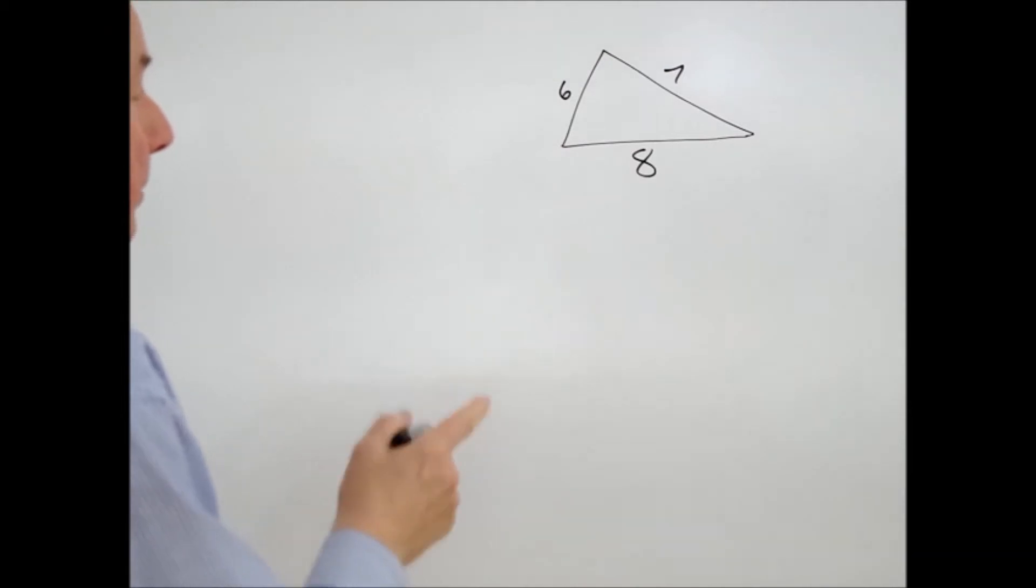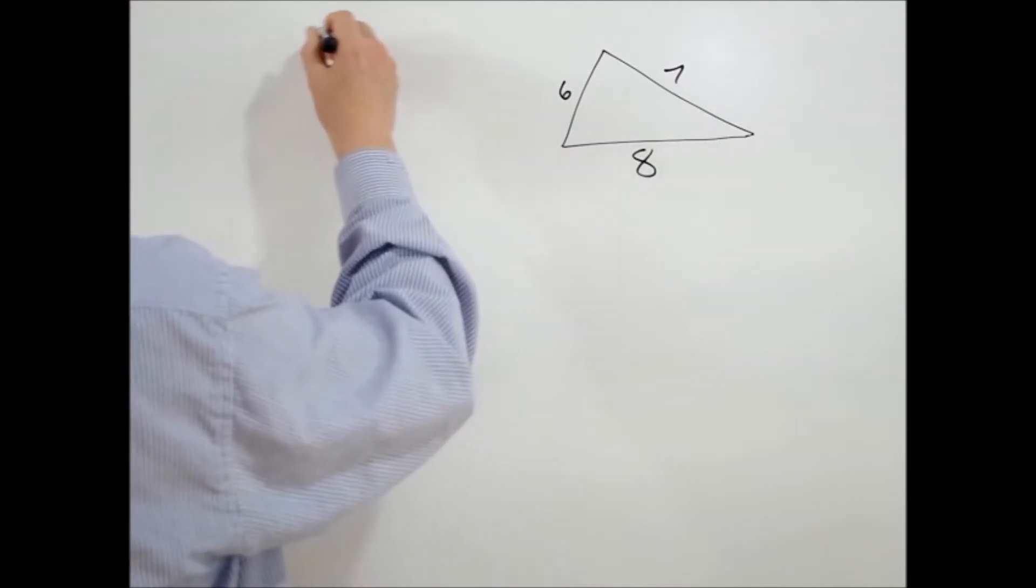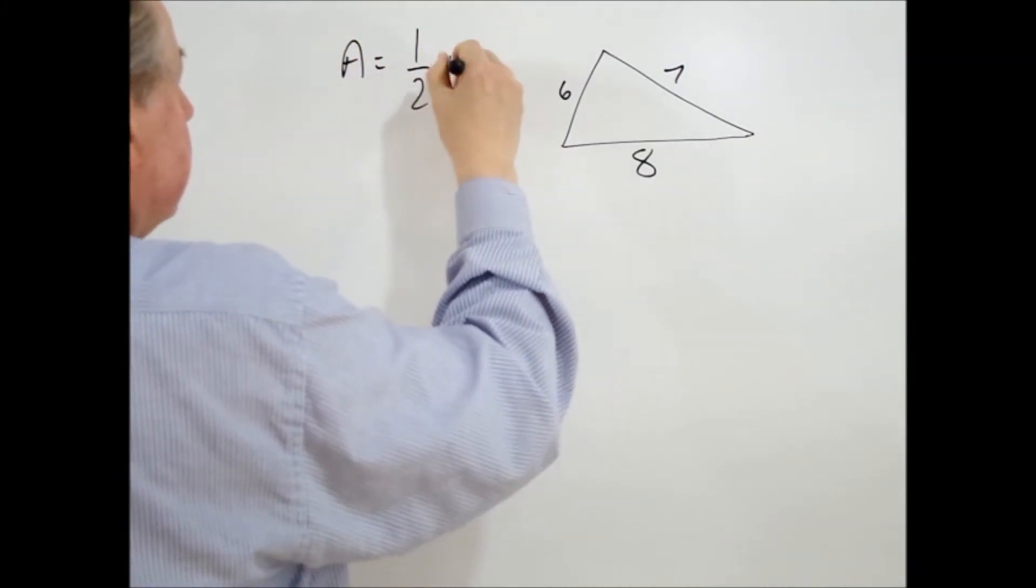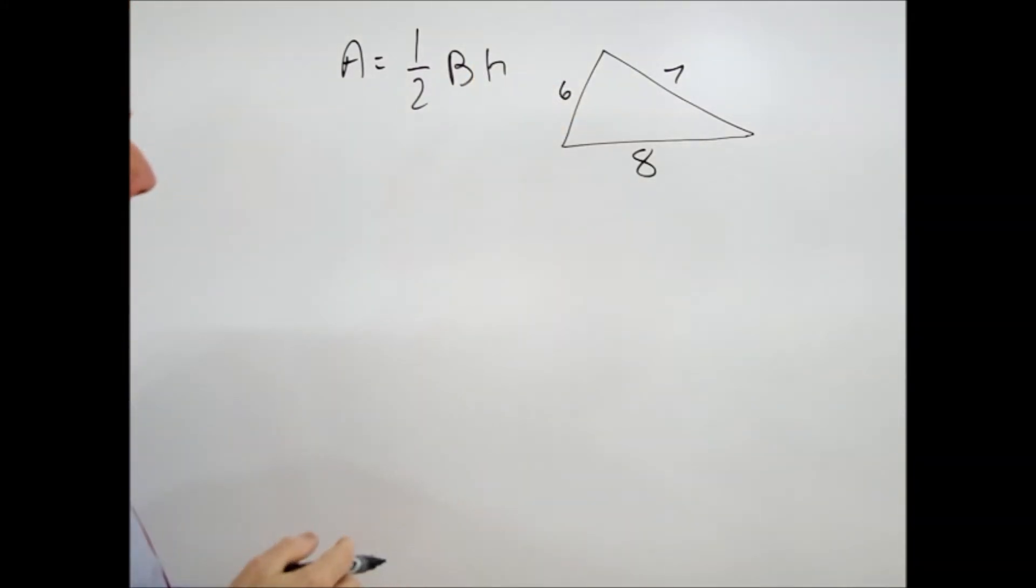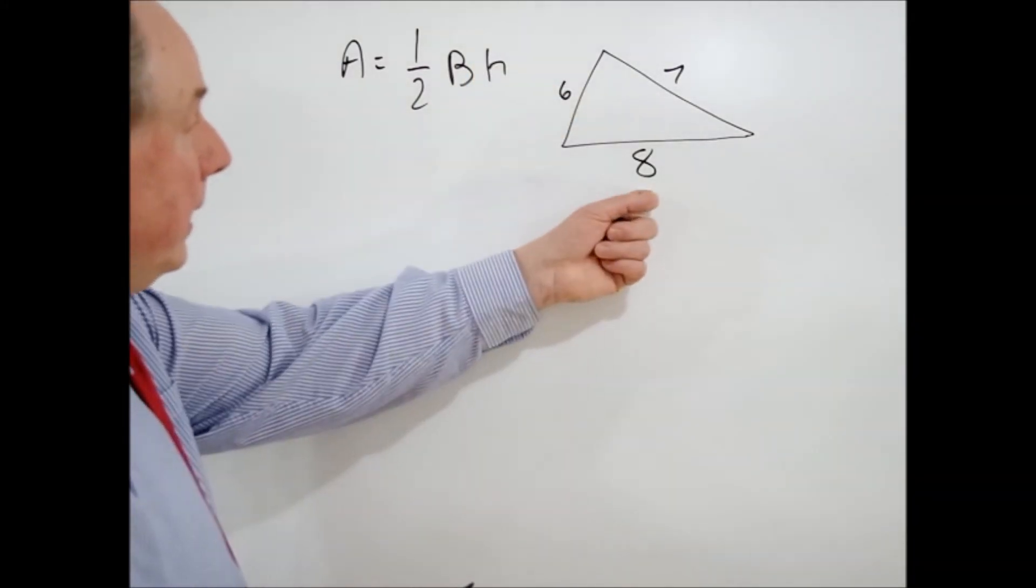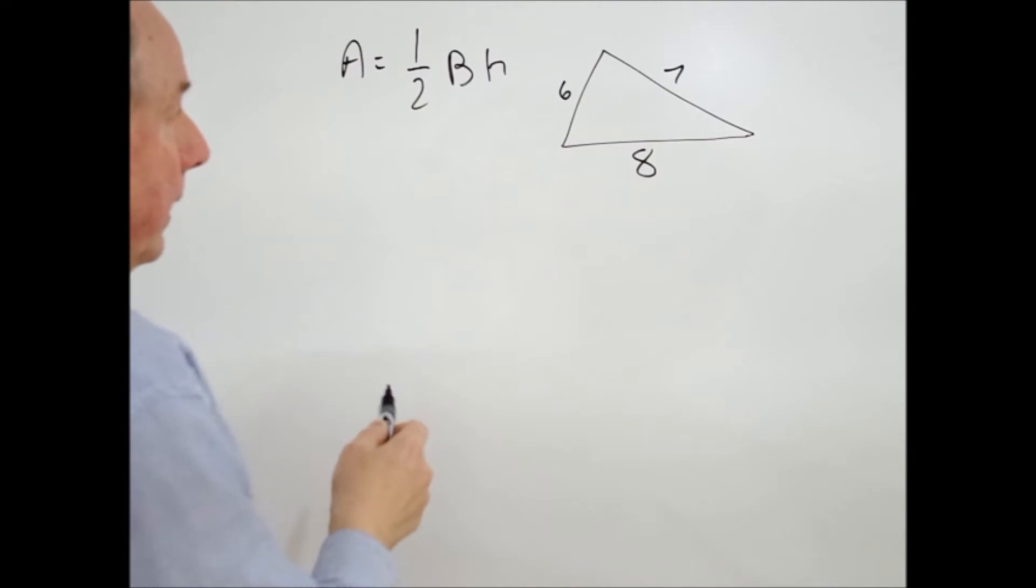But as you'll remember, the area of the triangle is given by the expression, or by the formula, the area is equal to one-half the base times the height. In this case we can assign the eight as being the base, but we really don't know what the height is. We're given the other side, but not the height.